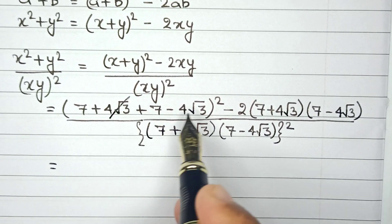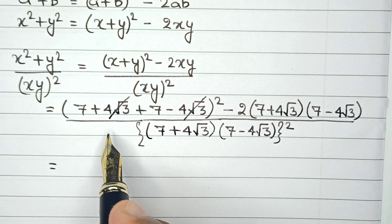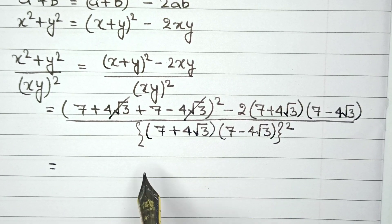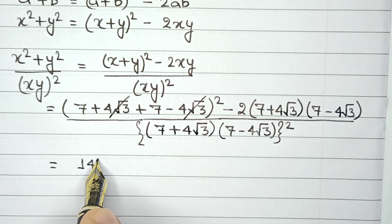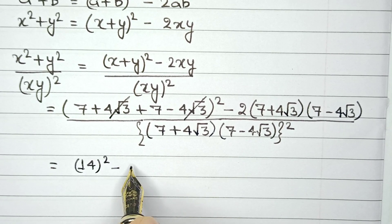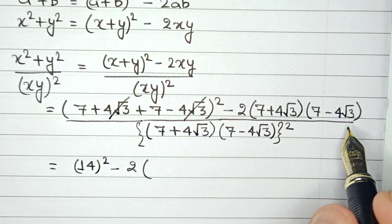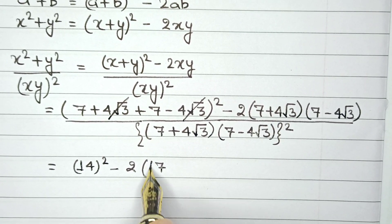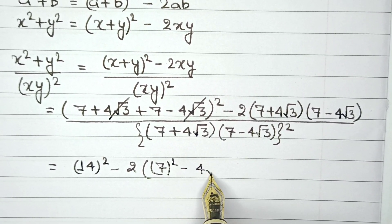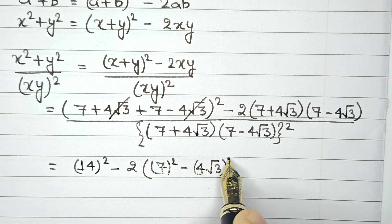Let's solve this. 4 root of 3 and 4 root of 3 will get cancelled out. So this is 7 plus 7, that is 14. So here we will have 14 square minus 2. This is a plus b multiplied by a minus b, which is a square minus b square.